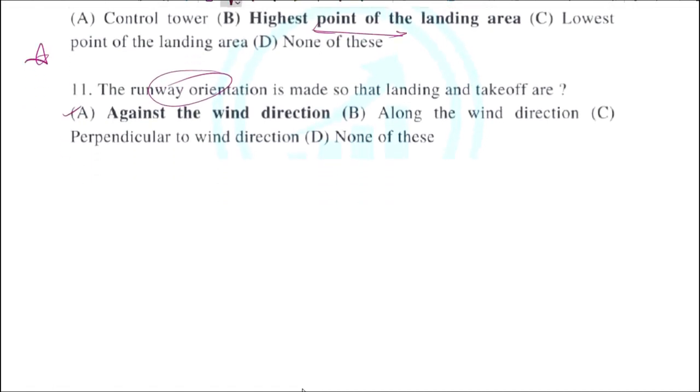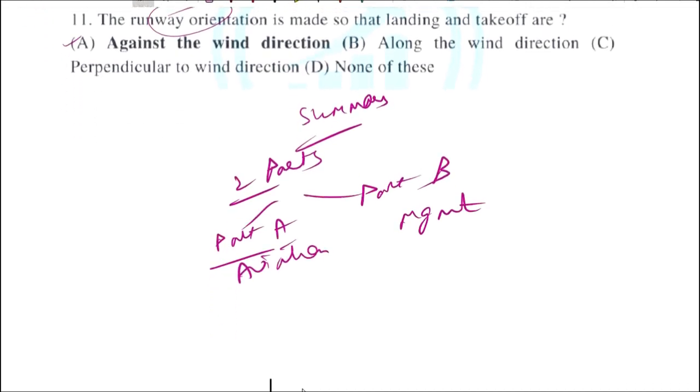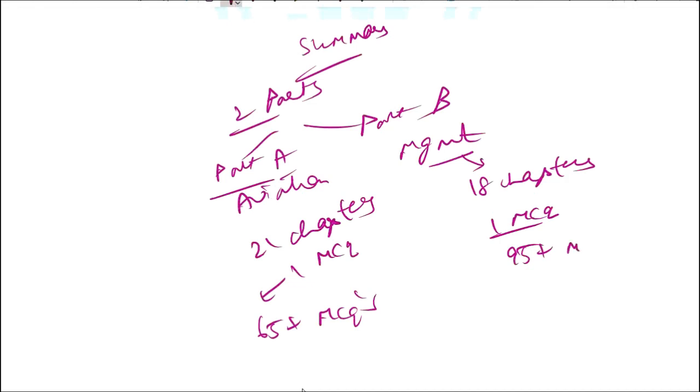Now the summary of the book. The book is divided into two parts: Part A on aviation, Part B on management. Part A has 21 chapters and one chapter for MCQs consisting of 65 plus MCQs. Management has 18 chapters and one chapter of MCQs consisting of 95 plus MCQs with solved answers highlighted in bold color.